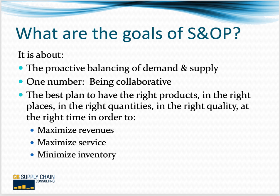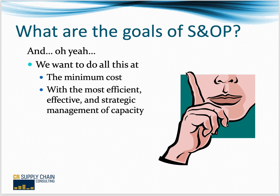Something I say all the time is the best plan and really the goal of operations is to have the right products in the right place, in the right quantities, in the right quality, at the right time — in order to maximize revenues, meet your sales goals, maximize service to deliver everything customers order on time, and to minimize the inventory necessary to do the above two. And of course, we want to do all of that at minimum cost, with the most efficient, effective, and strategic management of capacity possible.